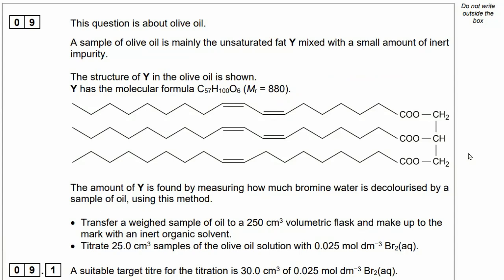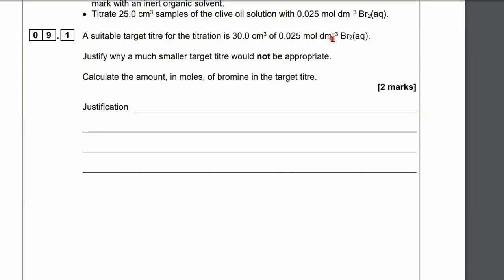Transfer a weighed sample of oil to a 250cm³ volumetric flask and make up to the mark with an inert organic solvent. Titrate 25cm³ samples of the olive oil solution with 0.025 mol per dm³ bromine aqueous solution. A suitable target titrate for the titration is 30cm³ of 0.025 mol per dm³ bromine solution. Justify why a smaller target titrate would not be appropriate, and calculate the amount in moles of bromine in the target titrate.